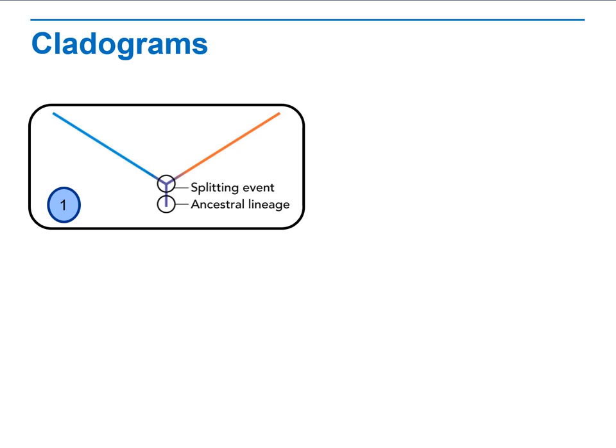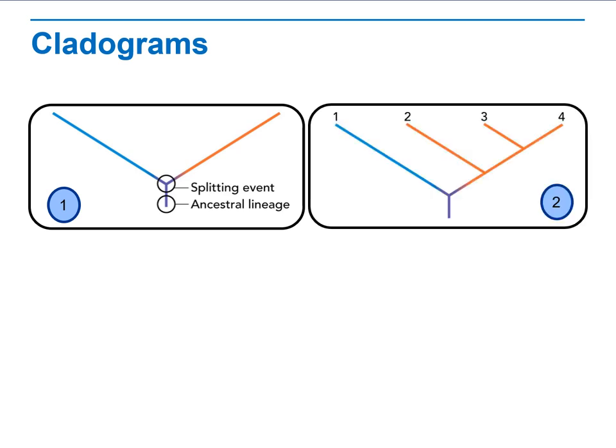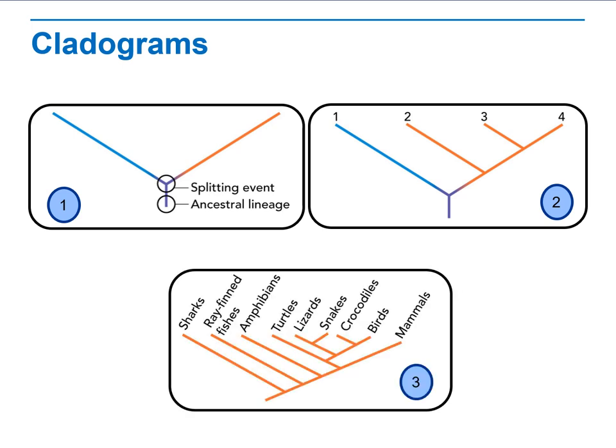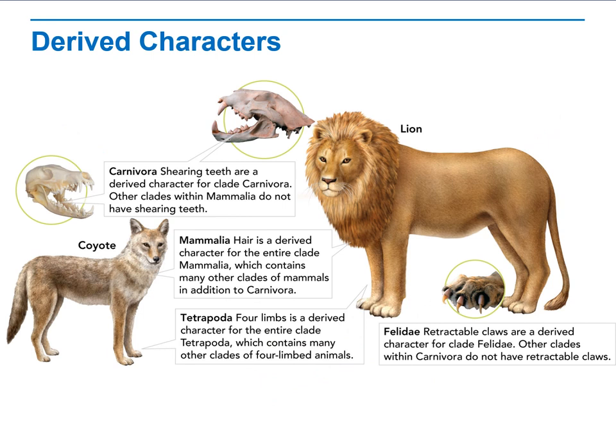We always start with the first line, which is called the ancestor lineage — the first common ancestor. They will split into two events. These two can then be divided into other two or three characteristics, and they share the same characteristic of the first one but may derive new characteristics.